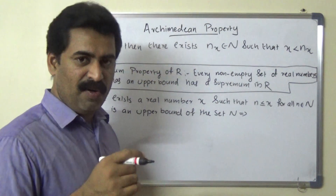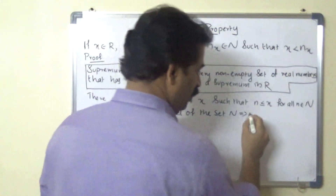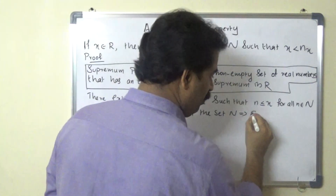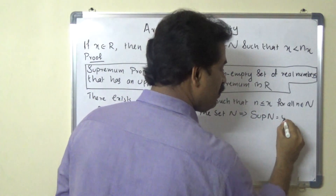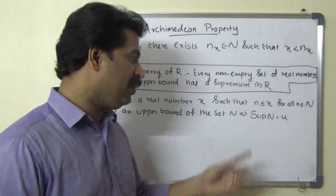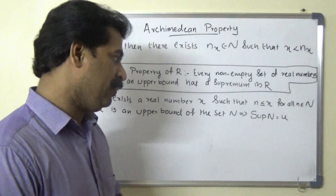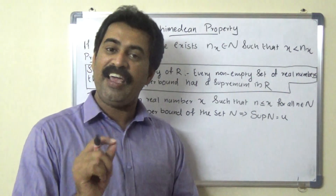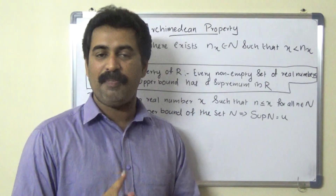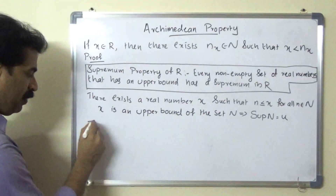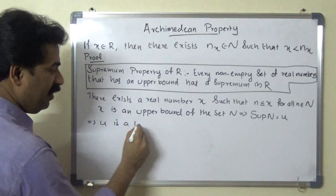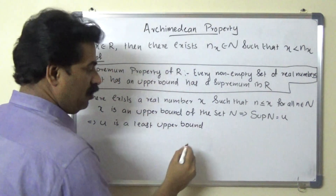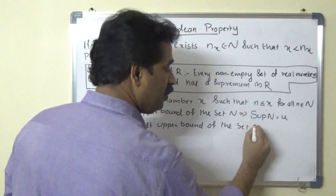This supremum is denoted by small u. That means u is the supremum of capital N, i.e., sup(N) = u. Small u is the least upper bound of the set capital N.